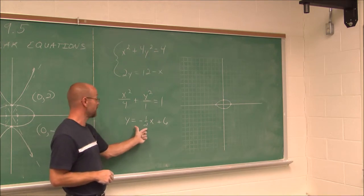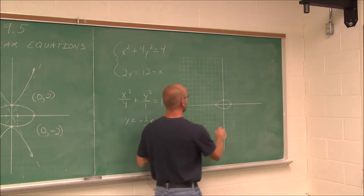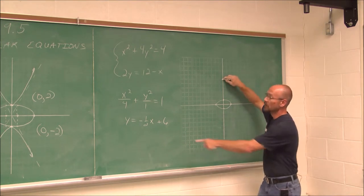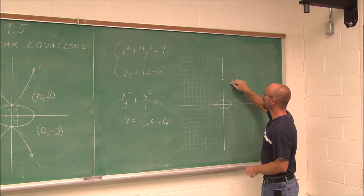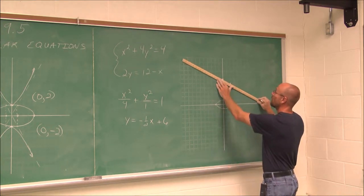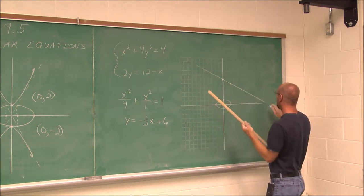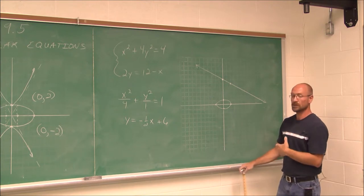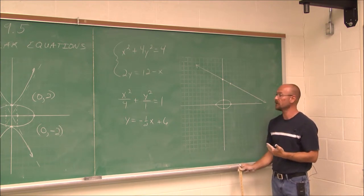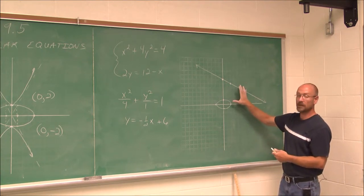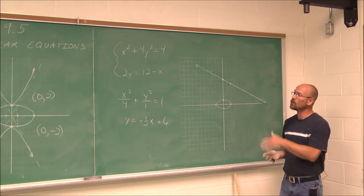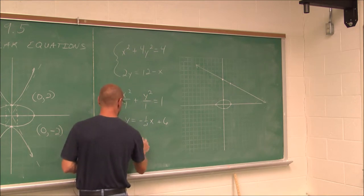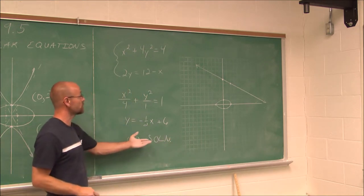Now I'm ready to graph these values. For the ellipse, the a value is plus or minus 2 centered at the origin, and the b value is plus 1 and minus 1. For the line y equals negative one-half x plus 6, I start at the y-intercept of 6 and use the slope to go down 1 and over 2. Looking at these two graphs, they will never intersect — the ellipse is down here and the line is up there. There is no intercept, which means there's no solution to this system. So we write: no solution.